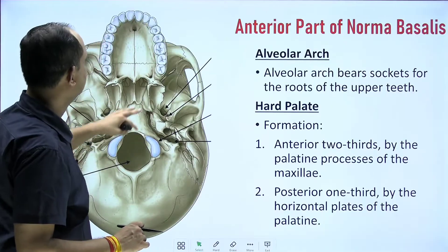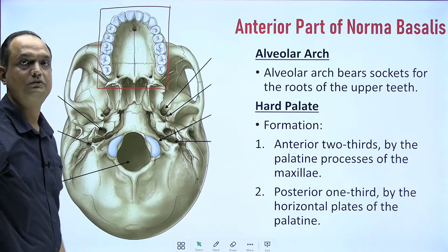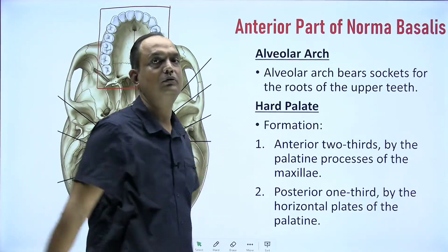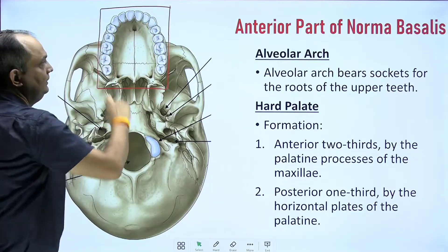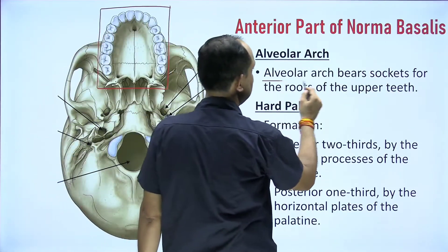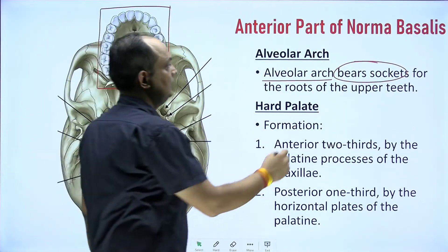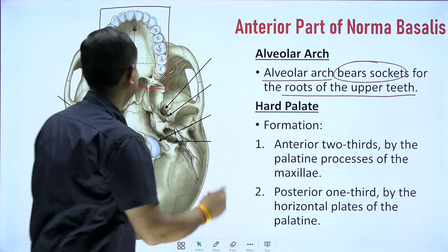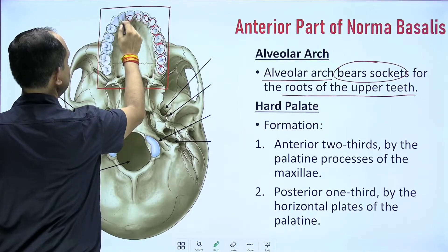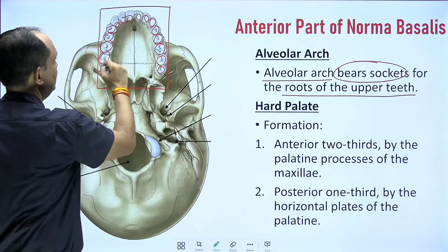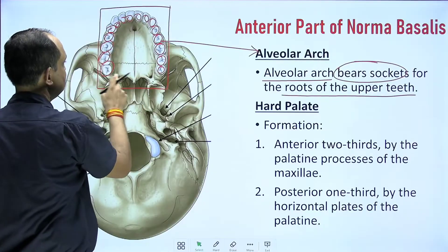In the anterior part of norma basalis, the first important structure is the alveolar arch. The maxilla bone forms your upper jaw. The alveolar arch contains sockets for the roots of the upper teeth. The area which lodges these sockets is known as the alveolar arch.